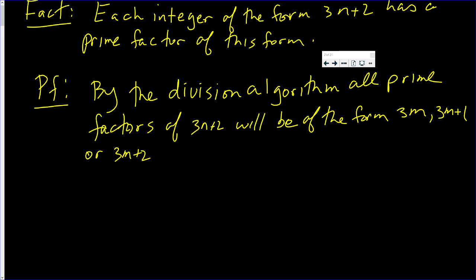And I need to show that you can't be 3n and you can't only be 3n plus 1. Okay, suppose a prime factor of 3n plus 2 is 3m.